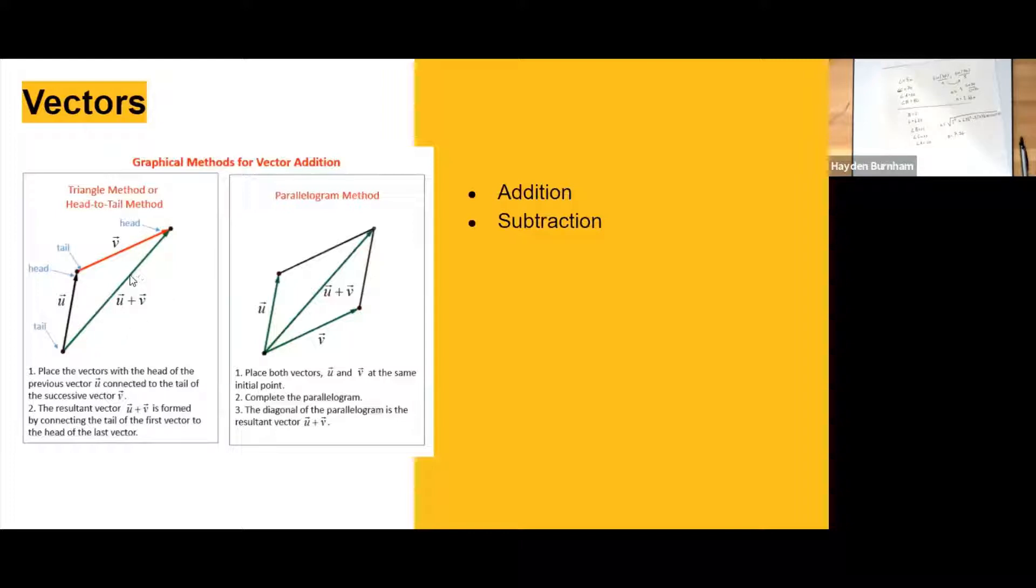But for now, just for the basics, I want to go over the two ways that you can add vectors together. So the first method is called the head-to-tail or triangle method, and basically you just take the tail of one vector and you put it right at the head, which is like the arrow, and you just follow it to the new point. So it's kind of like just connecting them together.